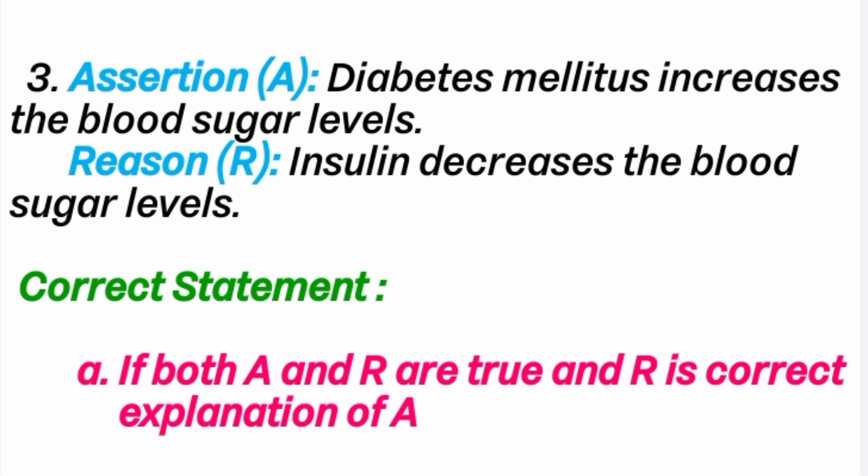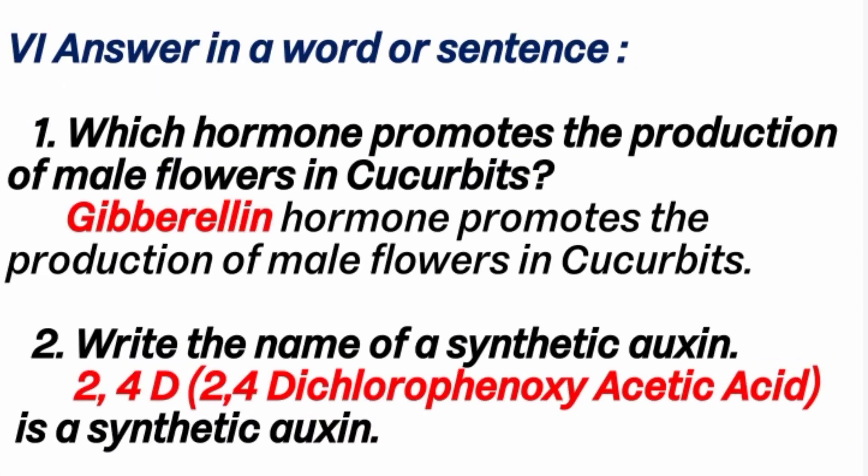3rd question. Assertion: diabetes mellitus increases blood sugar levels. Reason: insulin decreases blood sugar levels. Correct answer is A option — both A and R are true and R is the correct explanation of A. 6th section: Answer in a word or sentence. 1st question: which hormone promotes the production of male flowers in cucumber? Answer is Gibberellin.